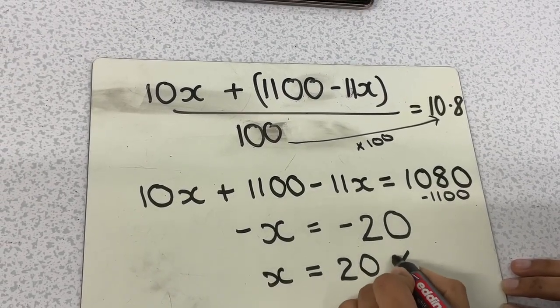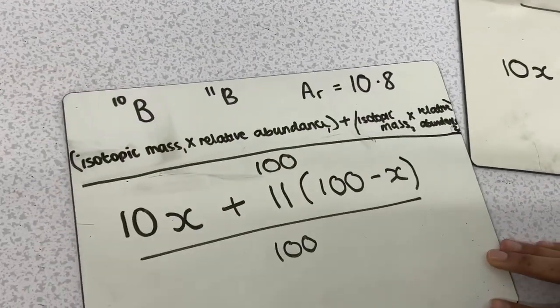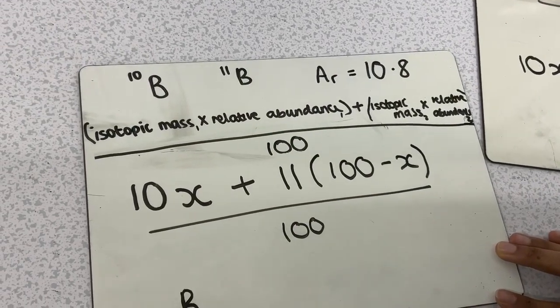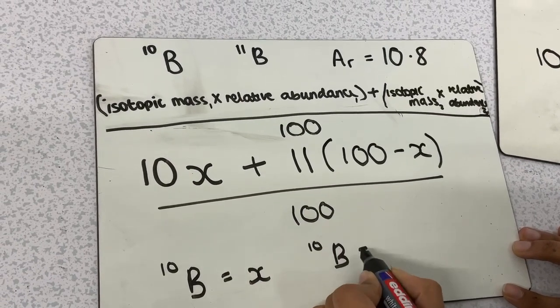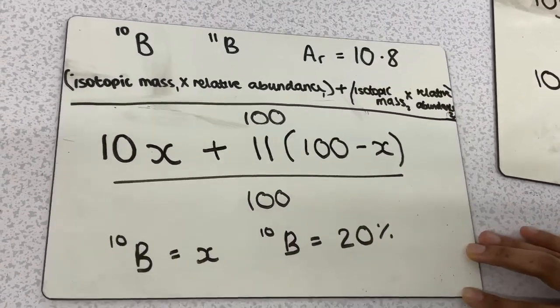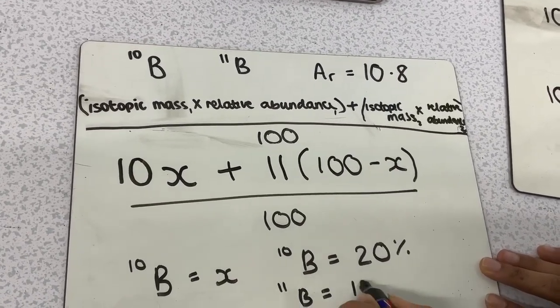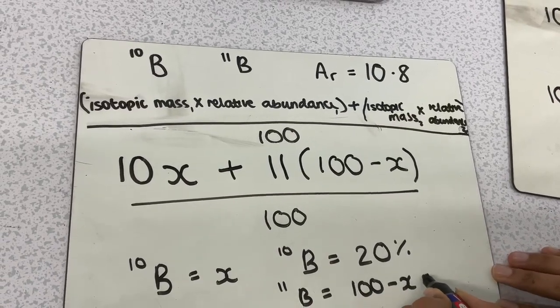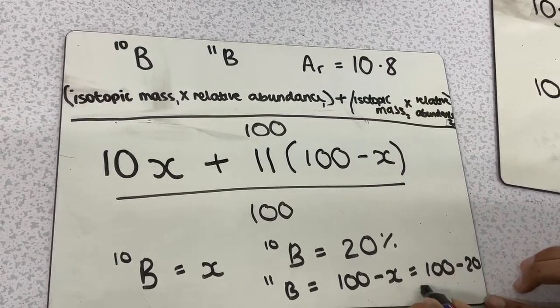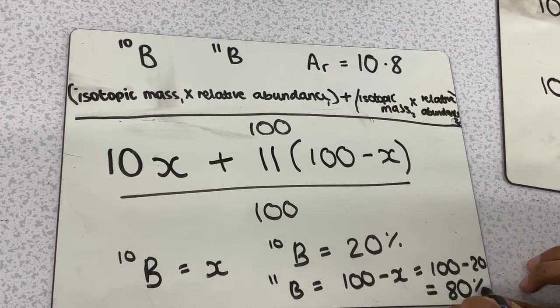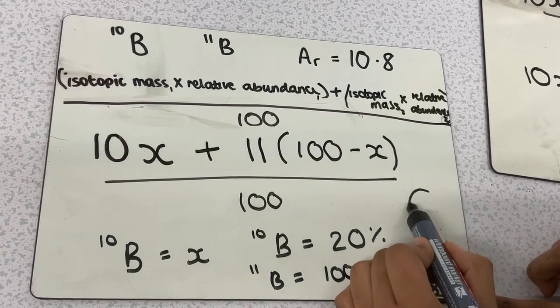So now we know what our relative abundance is for our first isotope. Where we have x, we have to substitute the x for the 20%. So now looking at our second isotope, we have to see that our relative abundance is 100 minus x. Now we know what x is. So we're going to substitute that 20 into the x, which is going to give us 100 minus 20, which equals 80. So our percentage of relative abundance for the second isotope of boron-11 is 80%, and this gives us the answer of C.